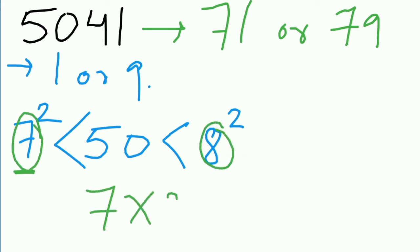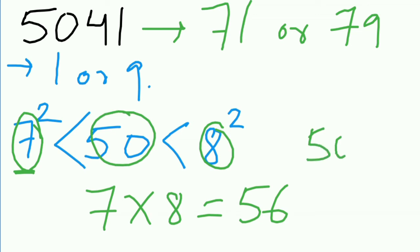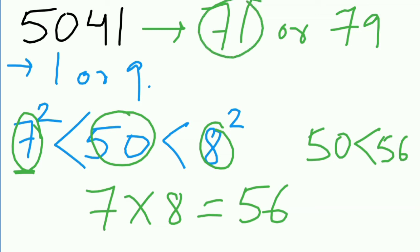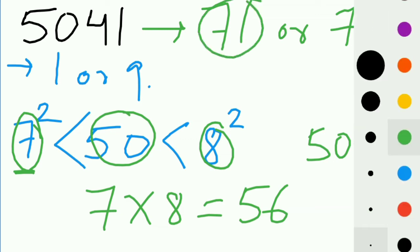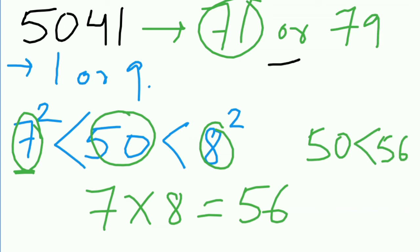To find out, let's take a look at these two digits and multiply them — you will get 56. Now 50 is smaller than 56. So the result will be the smaller number, which is 71. Your answer will be 71.